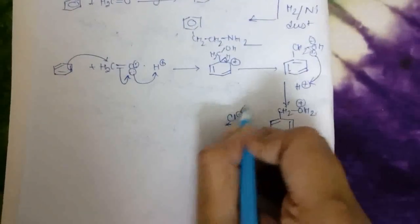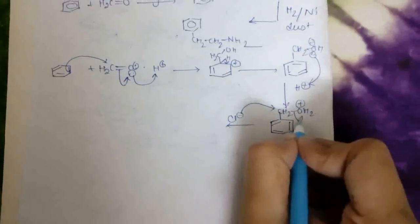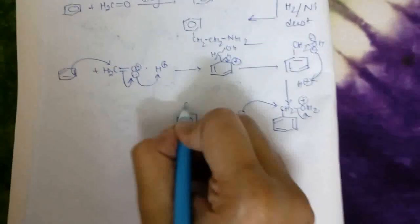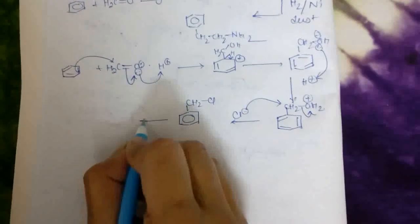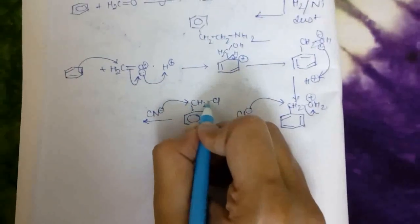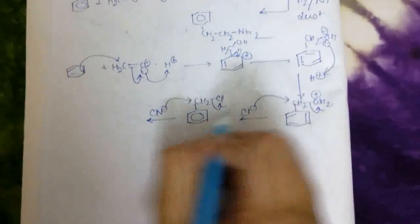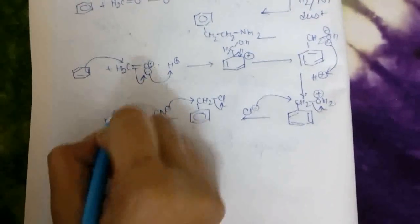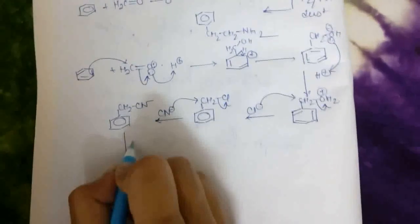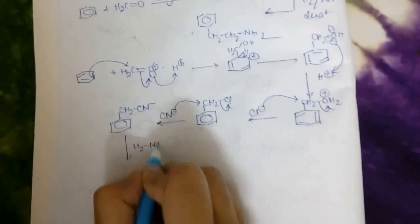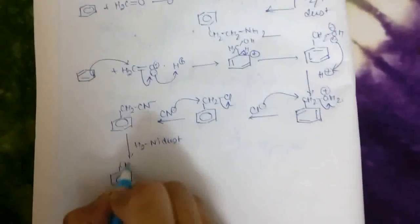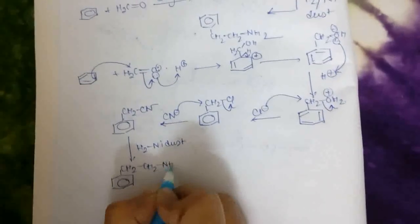readily Cl- will attack this carbon and release H2O, and ultimately benzyl chloride will form. Then the CN- of KCN again attacks this carbon, and chlorine will leave and this product forms. Then by reduction we get CH2-CH2-NH2.